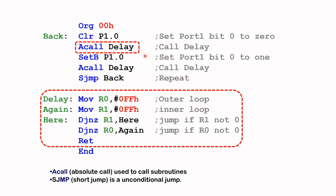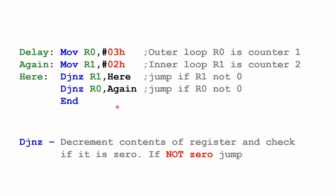This next instruction turns the LED off because 'setb P1.0' sets it to logic one. After that it calls the delay again, and once done it returns back to this part of the main program, which loops back to the beginning and the whole thing repeats itself.